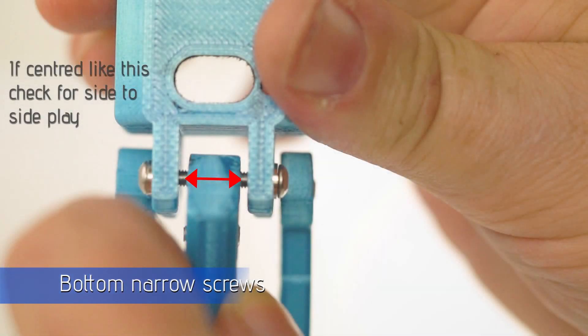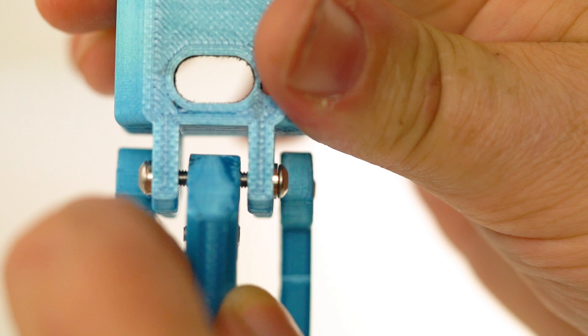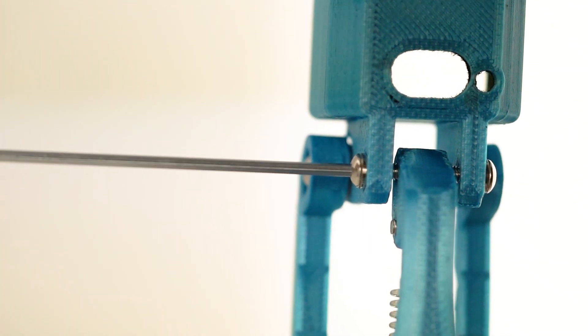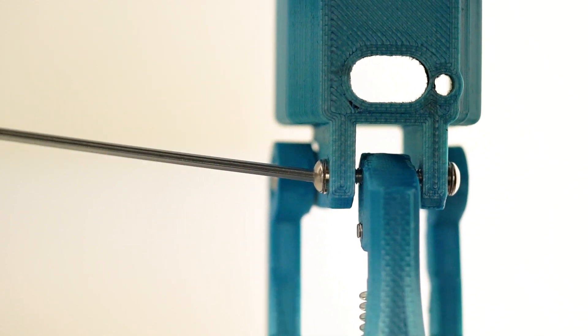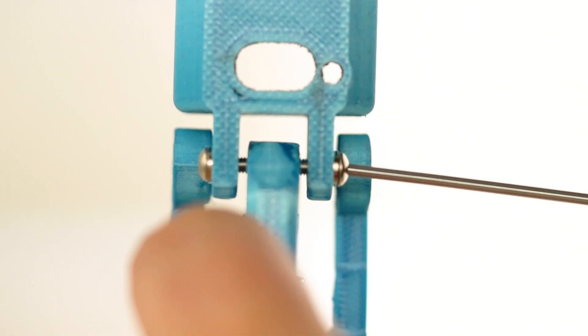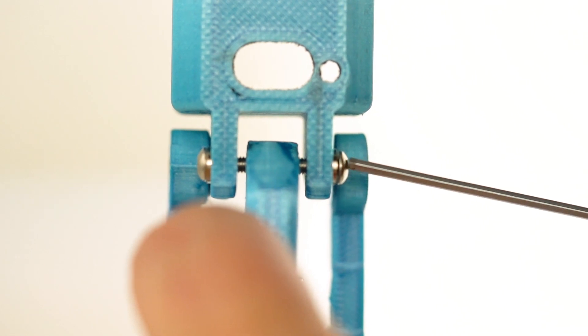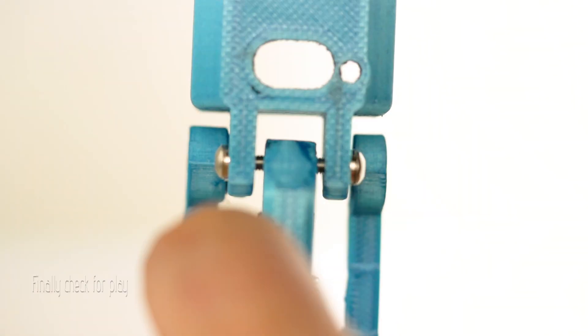Now to the bottom narrow screws. If it's centered like this, that's a good thing. But in this case, there's no play. No sideways play. So in this case, we need to actually loosen both sides equally. Firstly to the left. Now back to the right. Now let's check for play.